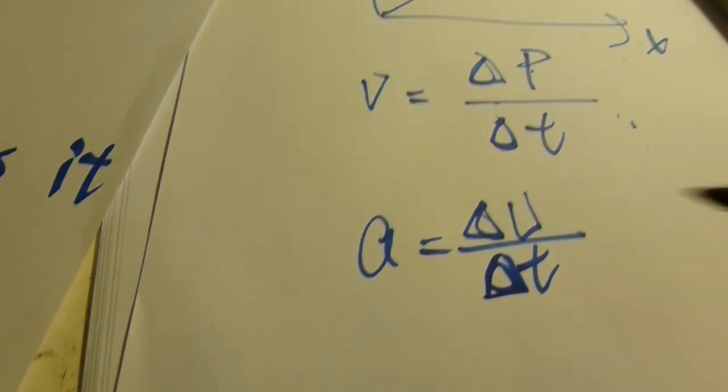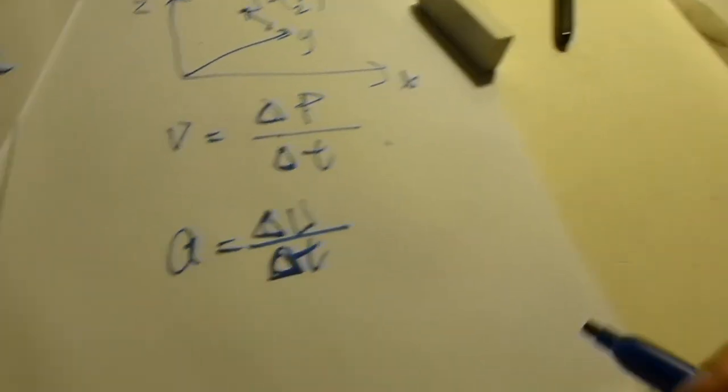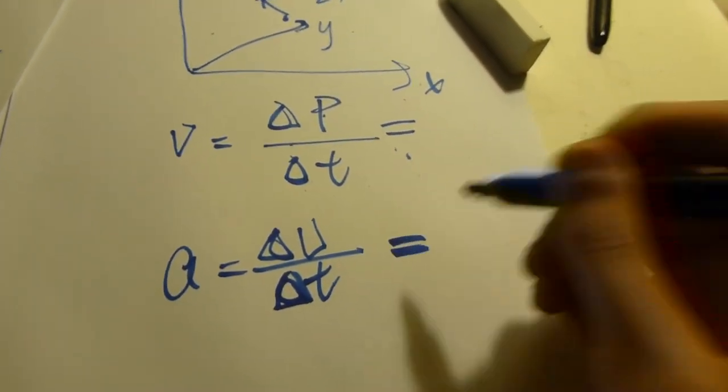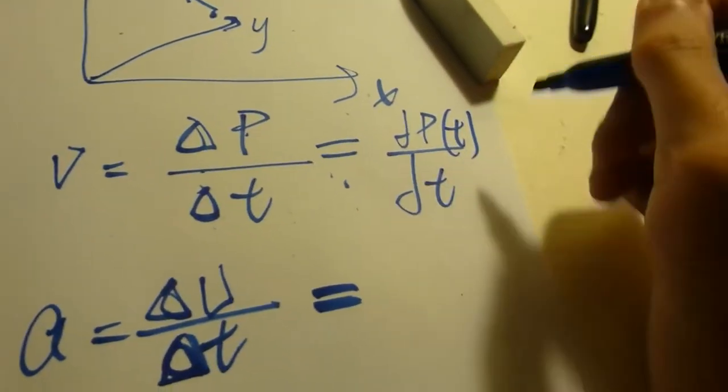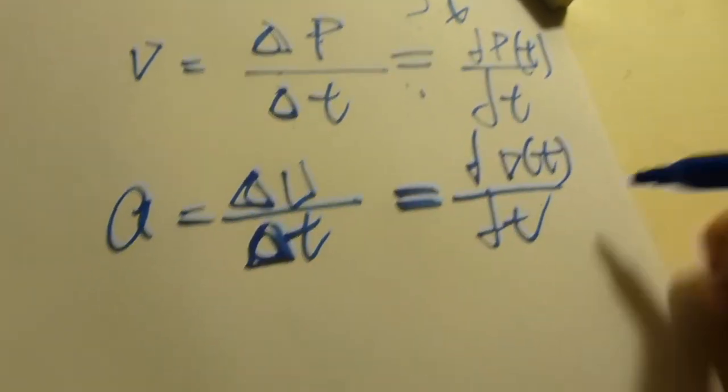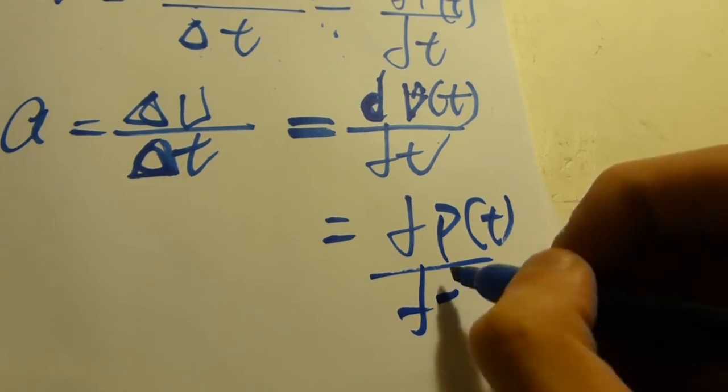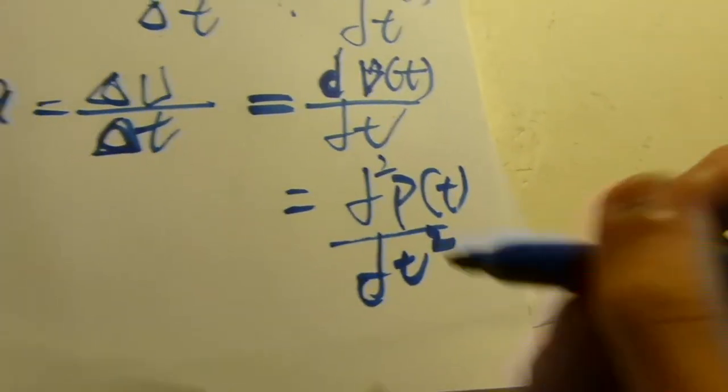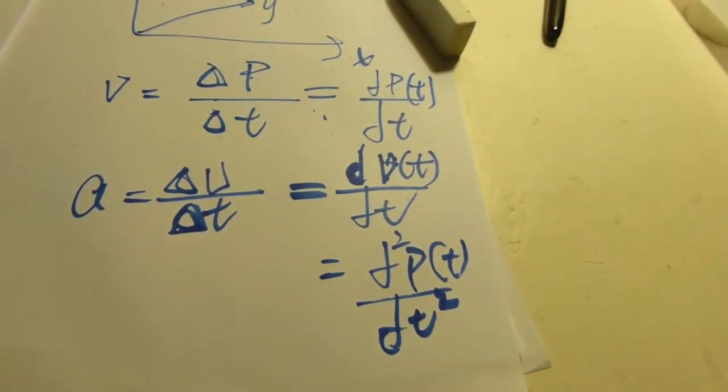We could assume that the space is consistent. It won't be very technically correct, but in most cases it works very well. So velocity could be the first derivative of the position function of time. And acceleration is the rate of change of velocity with respect to time, which is the second derivative of the position.